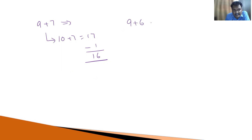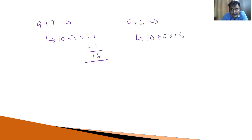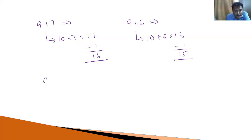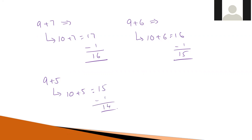Suppose, what is 9 plus 6? Let us consider 9 as 10. 10 plus 6, that is equal to 16. What we require? We require the sum of 9 and 6. You should take the sum of 10 and 6, then subtract 1. That is equal to 15. Suppose 9 plus 5: let us take 10 plus 5, that is equal to 15. Minus 1, that is equal to 14.